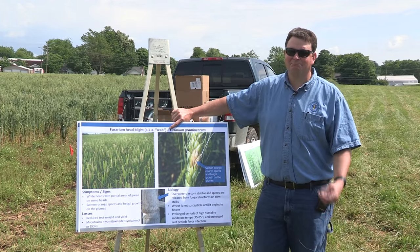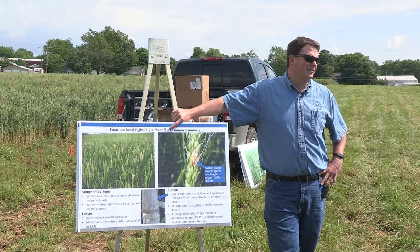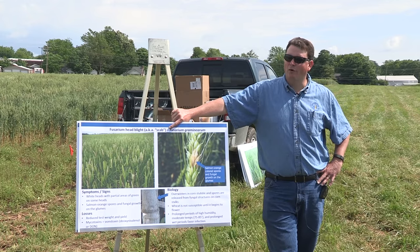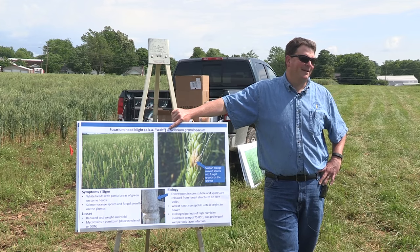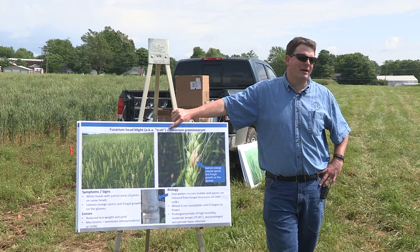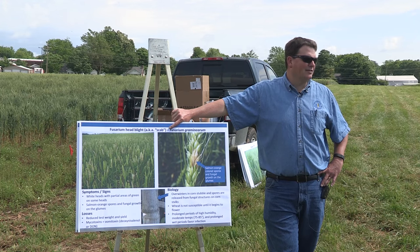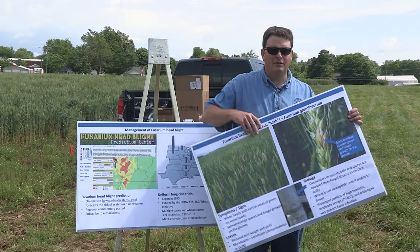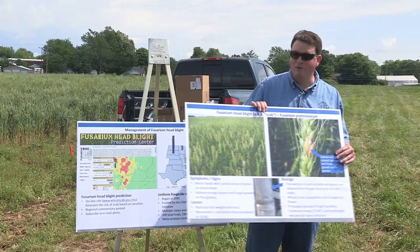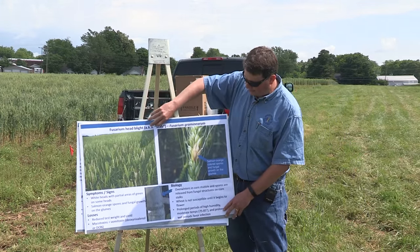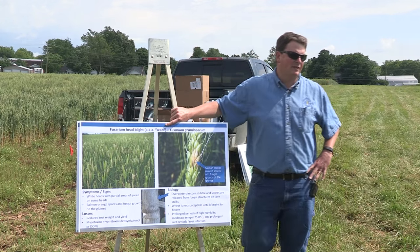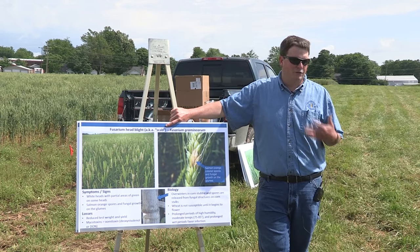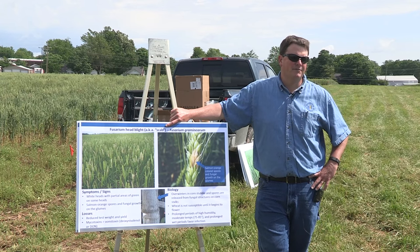So how can you distinguish scab from other causes of bleached heads? Look for a pink color — that's the actual Fusarium fungus causing this disease. Here's that salmon pink color; you're going to see that on the kernels. Sometimes it'll almost glow out there, almost like a neon pink. You can even see it from the road occasionally if it's that severe. What you're looking at is the fungus itself producing a whole lot of spores, and you can see them with the naked eye.